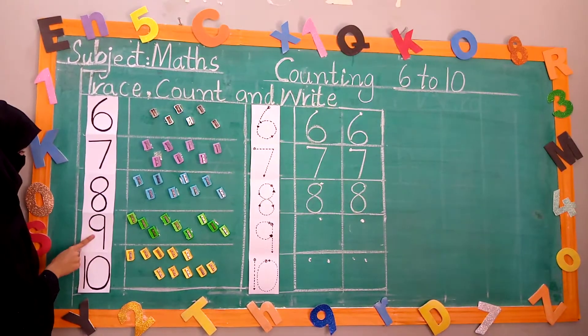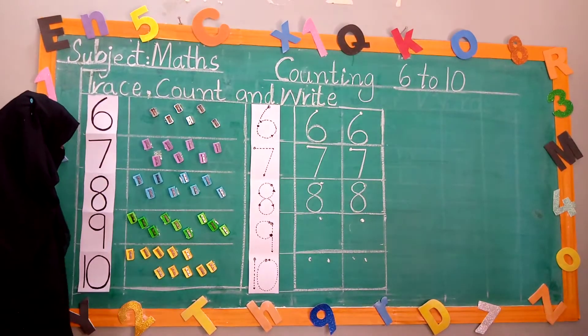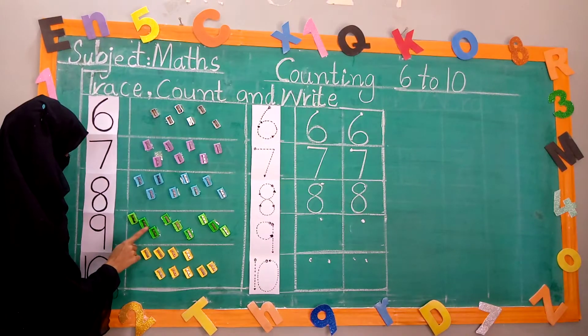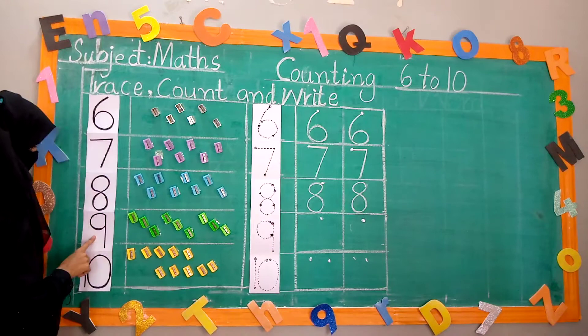Oh, look this is 9. How many sharpeners are here? Count with me. 1, 2, 3, 4, 5, 6, 7, 8, 9. Nine sharpeners.